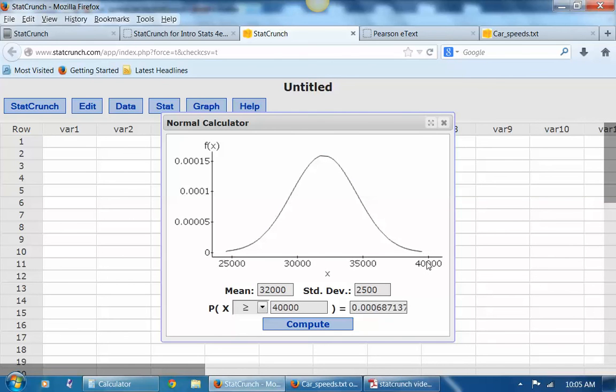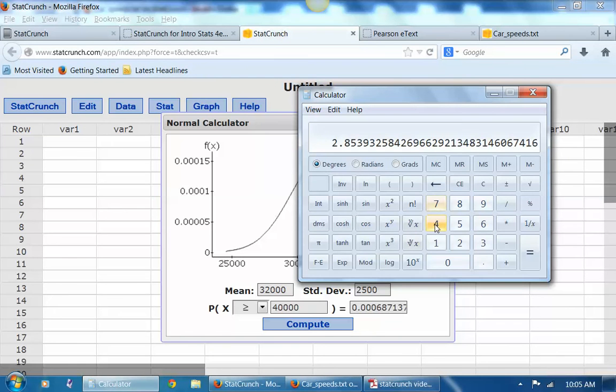Okay, notice 40,000 is way out here. So look at my probability. Very, very unusual. And in fact, if you calculate the z-score, you'll see that it's very unusual.